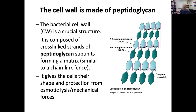In pretty much all bacteria, there are multiple layers of peptidoglycan. Gram-negative bacteria only have a few layers, while Gram-positive bacteria have many more layers. So there are differences in the thickness of the peptidoglycan in different bacteria.